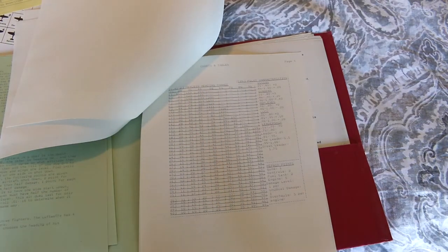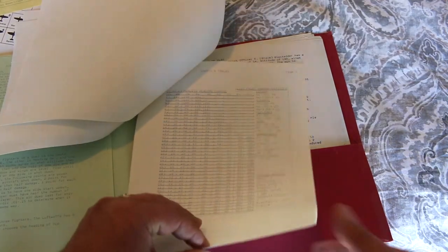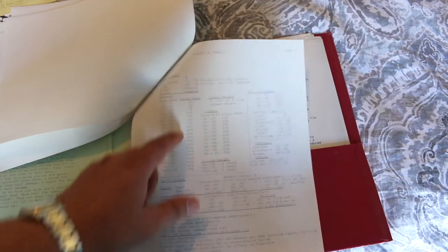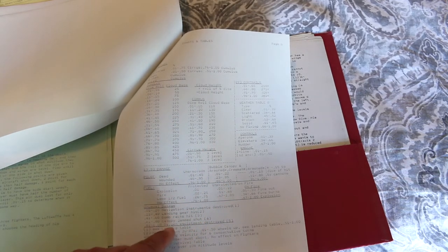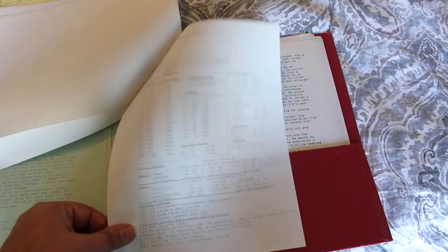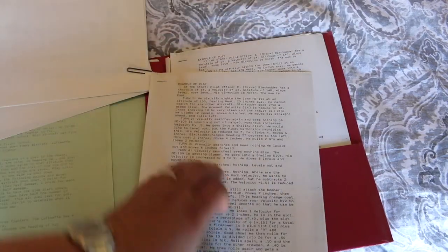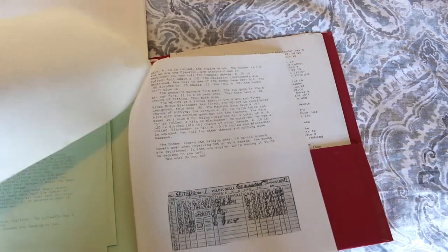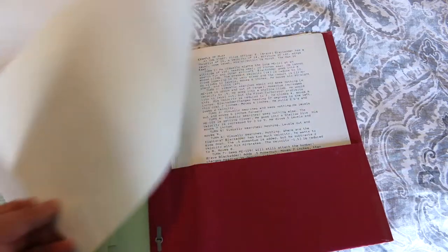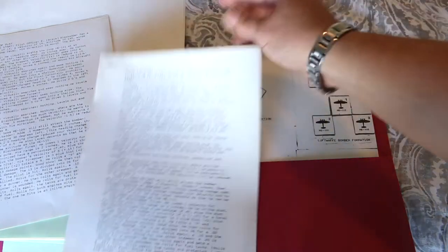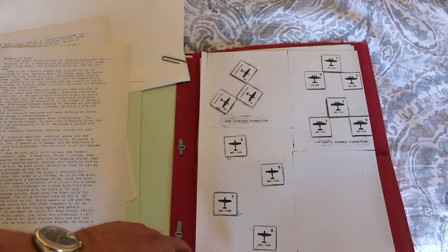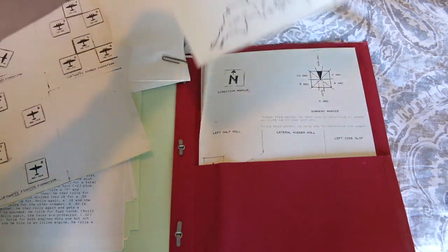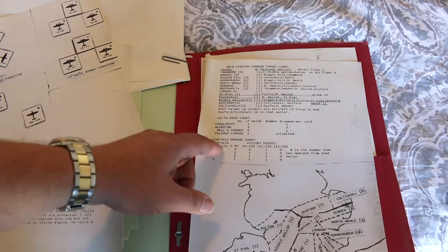And here's for hexless heading change. Maybe that's if you're not playing, I don't know if that's if you're not playing with a hex map or what's going on. And here's some tables for clouds and contrails. Weather table, control damage table, unusual damage. Interesting. Navigation instruments destroyed, bomb rack hits, all sorts of stuff. Here's an example of play. Looks like he's got two of them in here, one for each player. Showing how to fill out the sheet. Another example of play. And now it's showing the, I'm not sure what this is for. This is showing different formations I guess they would use. Fighter command target chart, raid chart, airfield damage chart.